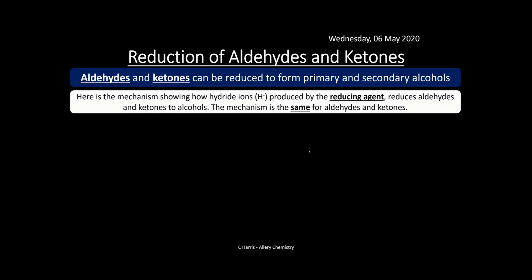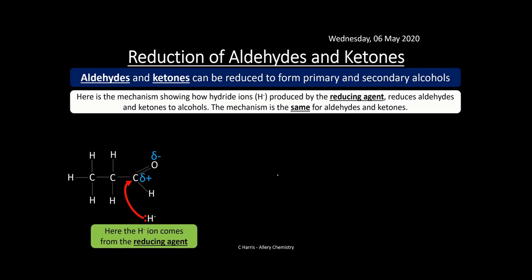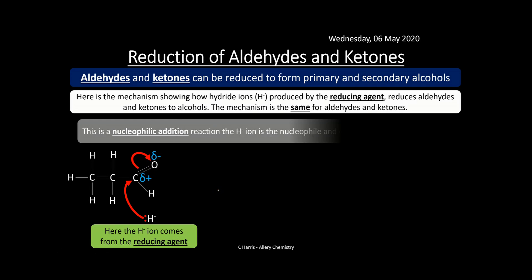The mechanism shows how hydride ions, H⁻, produced by the reducing agent, reduce aldehydes and ketones to primary and secondary alcohols respectively. The mechanism is the same for both aldehydes and ketones. The H⁻ ion, with its lone pair of electrons, attacks the delta-positive carbon from the reducing agent we're using.